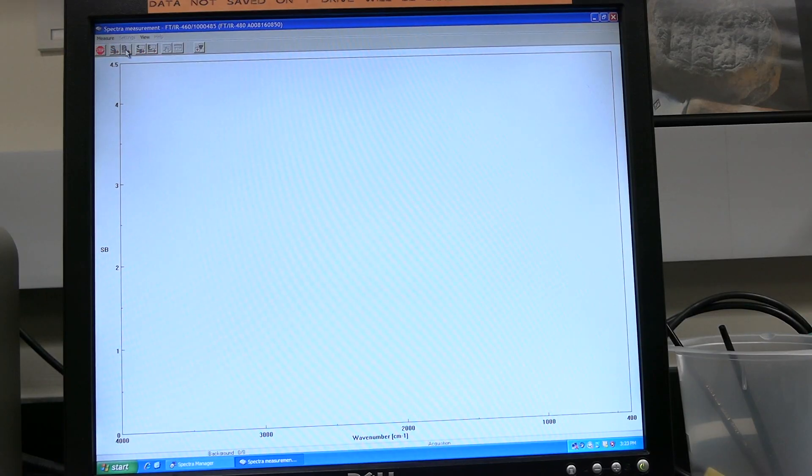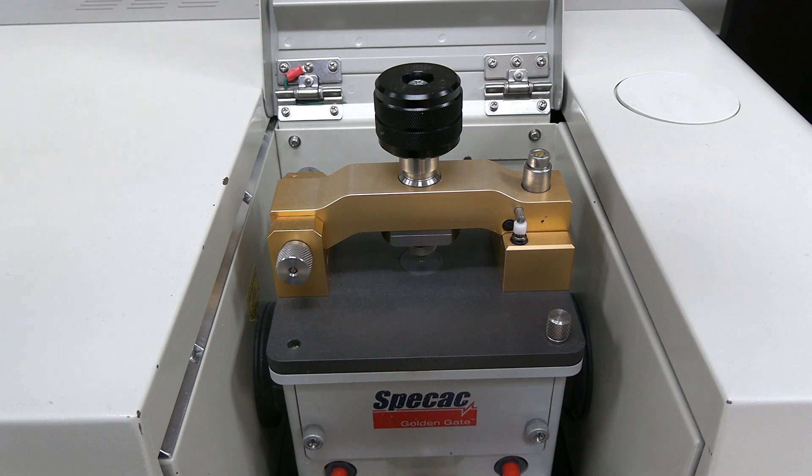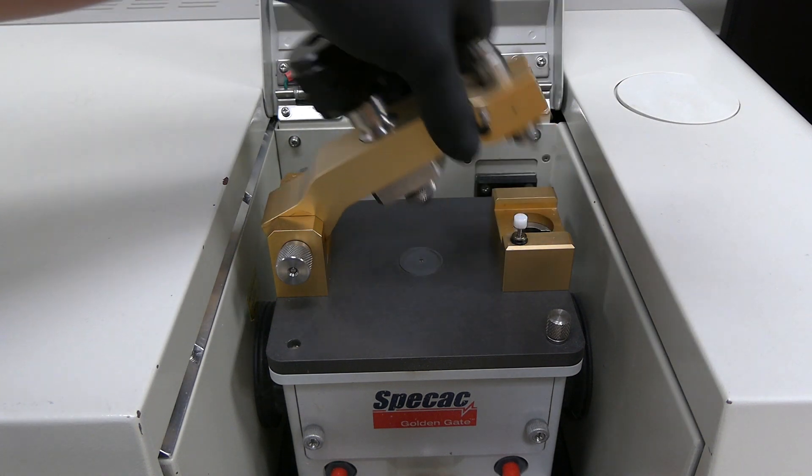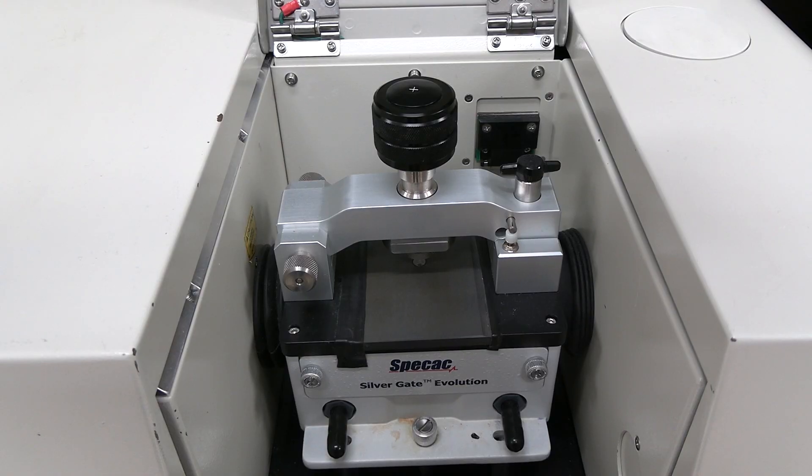Click on the background button and wait for the background measurement to finish. Place sample in the sample chamber. If using the ATR, start by lifting the anvil arm. Remember, the ATR may look different but functions the same.